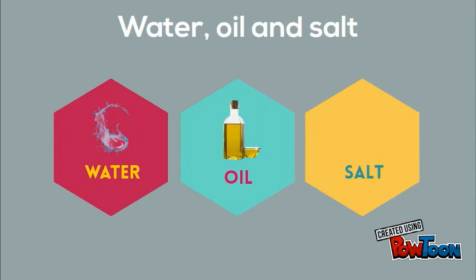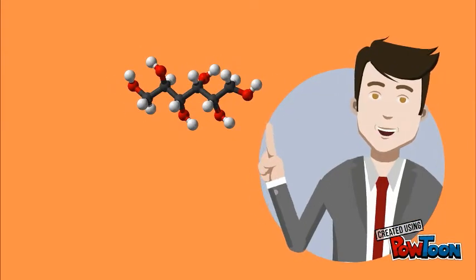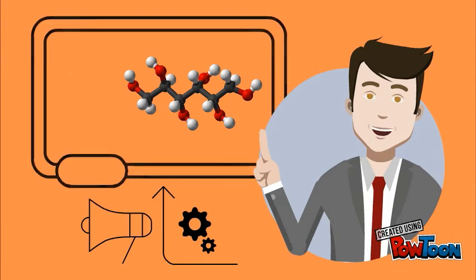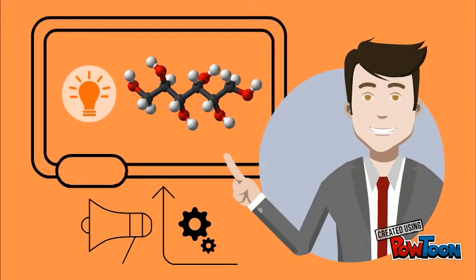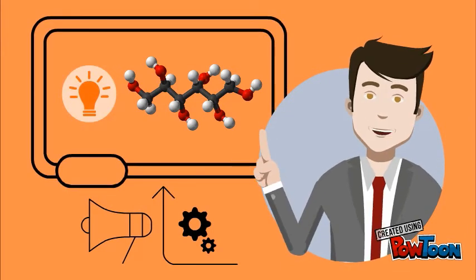Oil makes the bread softer and helps prevent water from escaping during baking. Salt protects gluten molecules from one another and also gives the bread taste. Without salt, gluten molecules will be close together, making a more dense dough.